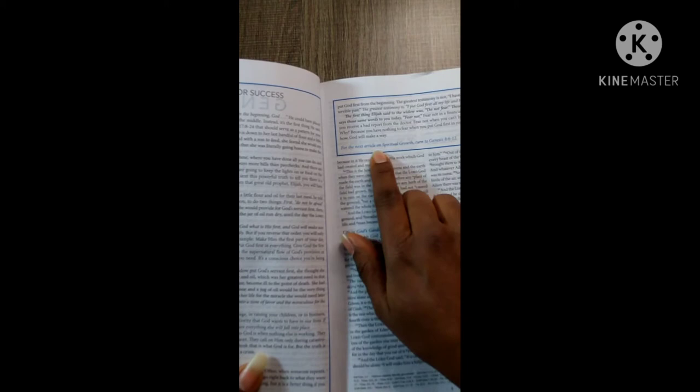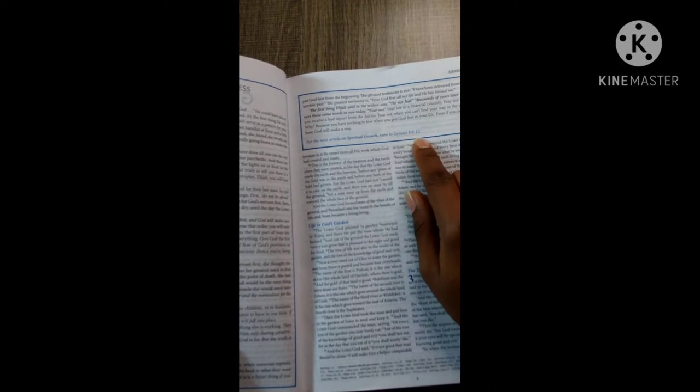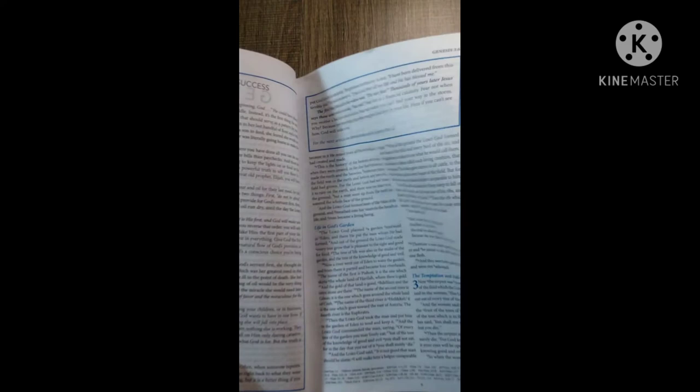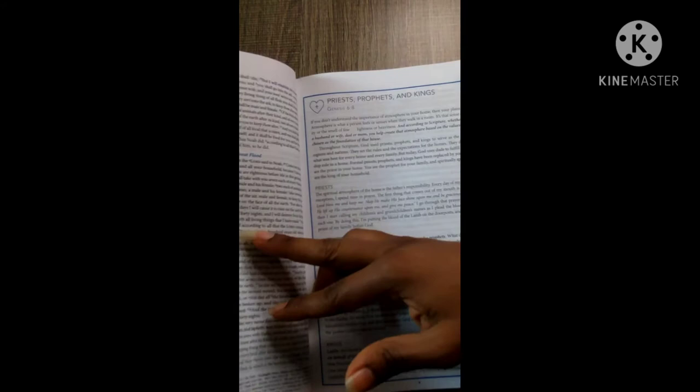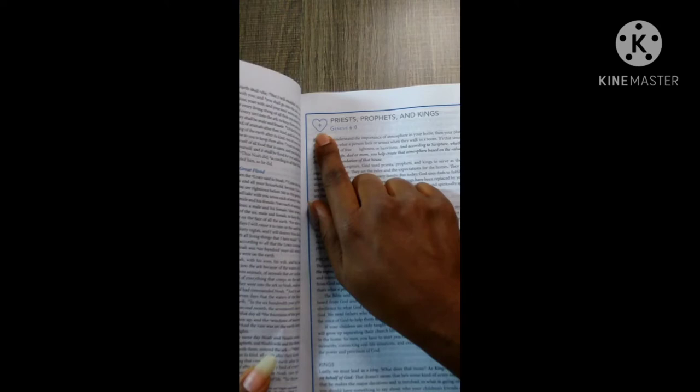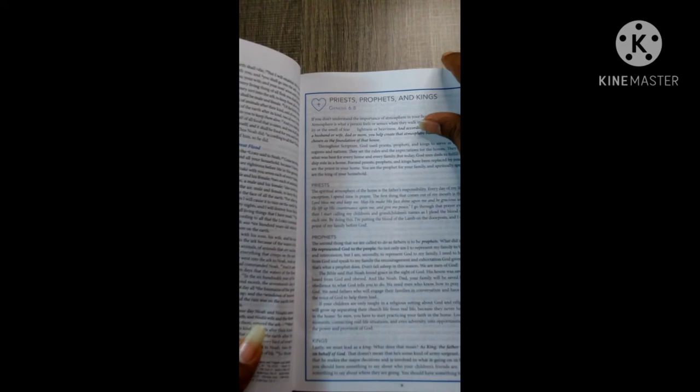It gives you a little article about it—The Great Testimony. Then it says for the next article on spiritual growth, turn to Genesis chapter 8 verses 6 through 12. So it gives you where to go when it talks about spiritual growth after the article. This one with the heart, the cross, it talks about Priests, Prophets, and Kings.